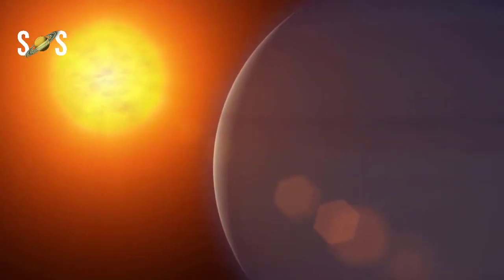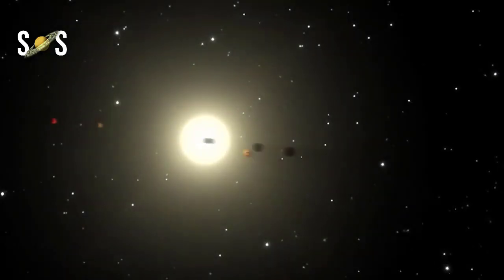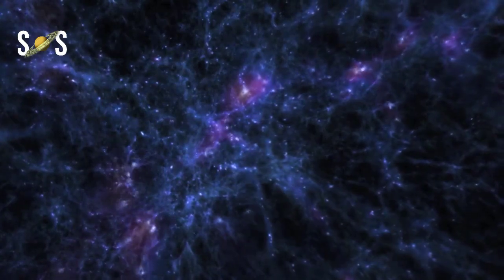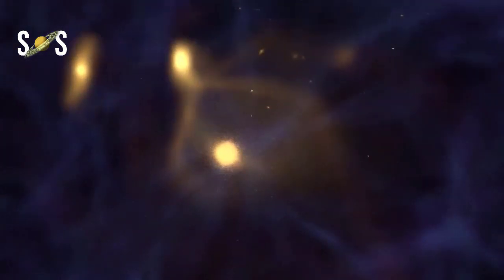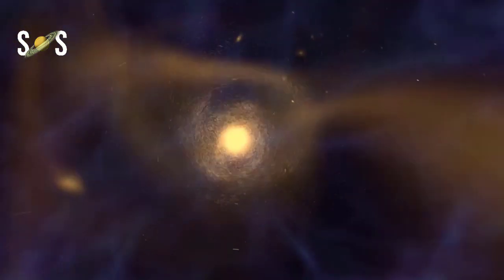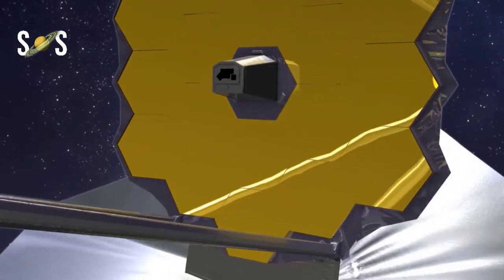One of the James Webb Space Telescope's science goals is to look back through time to when galaxies were young. Webb will do this by observing galaxies that are very distant, at over 13 billion light-years away from us. To see such far-off and faint objects, Webb needs a large mirror.